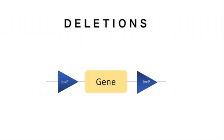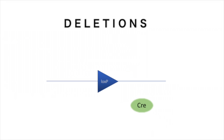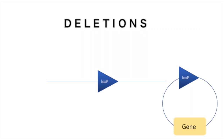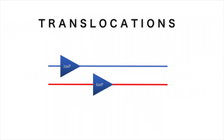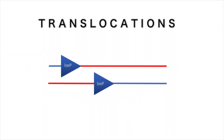Deletions occur when the two LoxP sites are facing the same direction. Cre recombinase recognises the orientation of the LoxP sites and the gene is removed, resulting in the original sequence with only one LoxP site and another DNA segment containing the gene and the second LoxP site. Translocations occur when the LoxP sites are located on separate chromosomes, resulting in the segments succeeding the LoxP sites being exchanged between the two chromosomes.